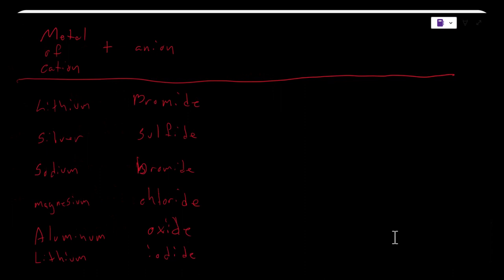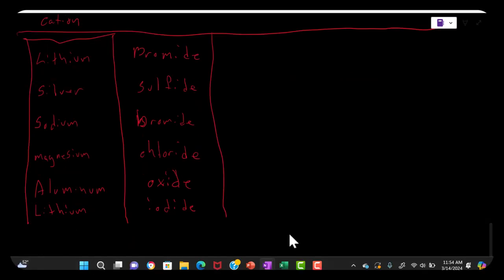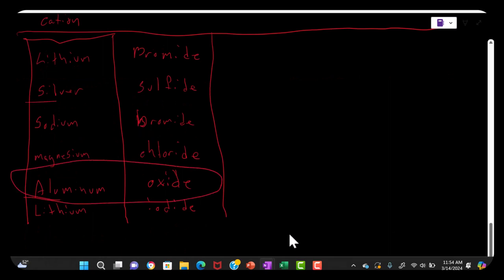So again, these are the metals that the cations were formed from on the left, and these are the anions on the right. A couple names I want to highlight are aluminum oxide and silver sulfide.